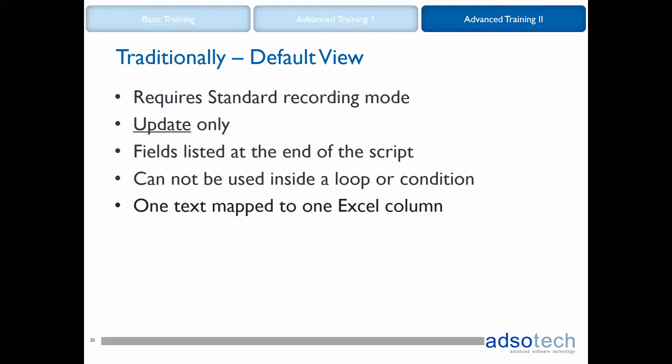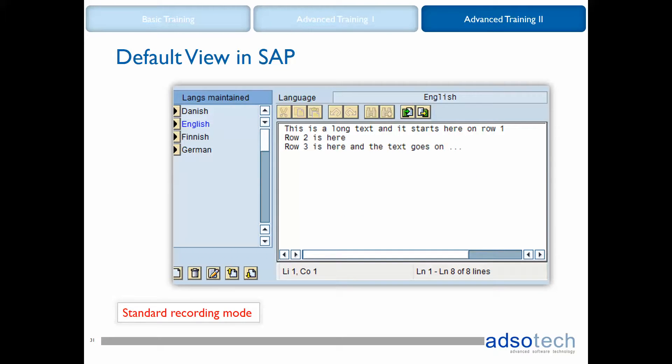There are restrictions as to what screen view works with what recording mode, and whether data flows to SAP or from SAP. You can look at the issue from the recording mode perspective, but you can also start from the perspective of the screen view in SAP. If you prefer to use the default view and have your text mapped to one Excel column, you need to use the standard recording mode. Using the default view and standard recording mode, you are able to do updates only to SAP — no reading of text. Done this way, the recorded long text fields are shown at the end of the script and you can drag and drop, but the long texts cannot reside inside a loop or a condition. Keeping these restrictions in mind, it can be very useful and user-friendly to handle the text as one block — a single field.